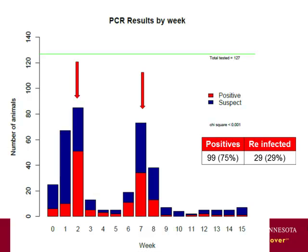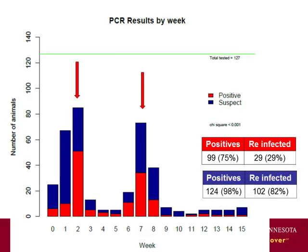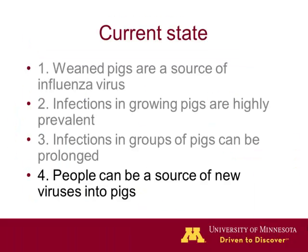We are trying to sort out whether it's new strains, slightly different strains, or similar strains already in the population — to illustrate how difficult it is. The key point is that even over these long periods, a very low proportion — maybe one to two percent of pigs — will remain positive. Those will be the ones that, if shipped to another farm or population, will move the viruses around. Infection in groups can be prolonged.